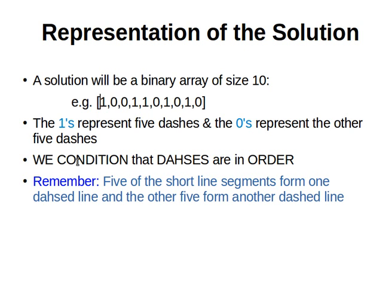Remember that we condition that we know the order, from left to right or from right to left, and five of the short line segments form one dashed line, the other five form another dashed line. The first one will be the ones, the other one will be the zeros. In the next video, we'll have more detail about the representation and how to code this idea. Thanks very much.